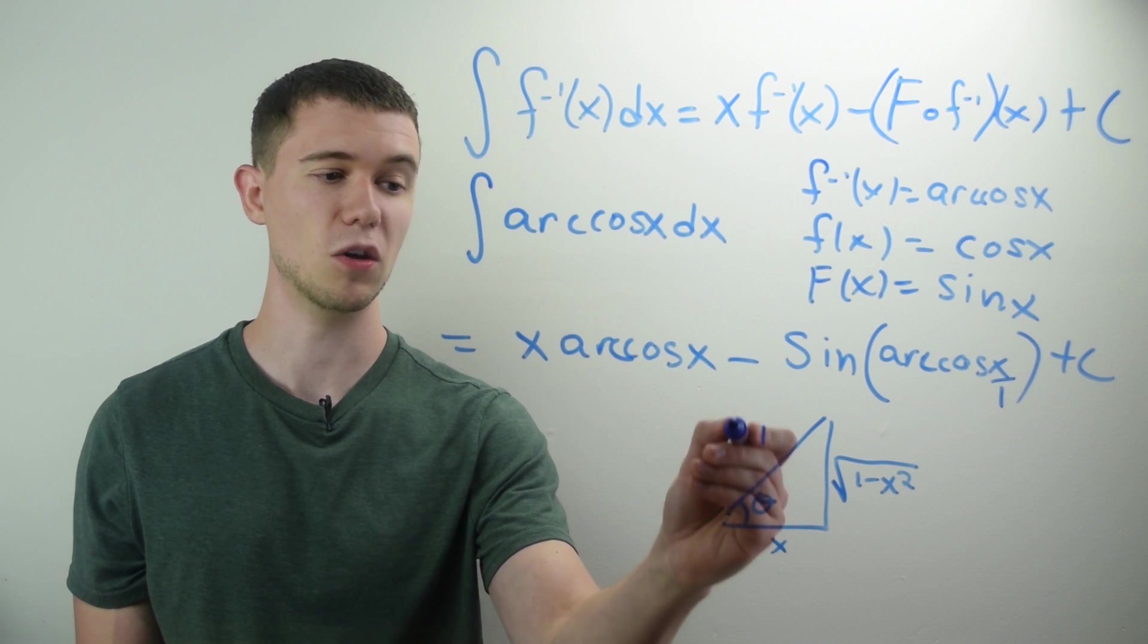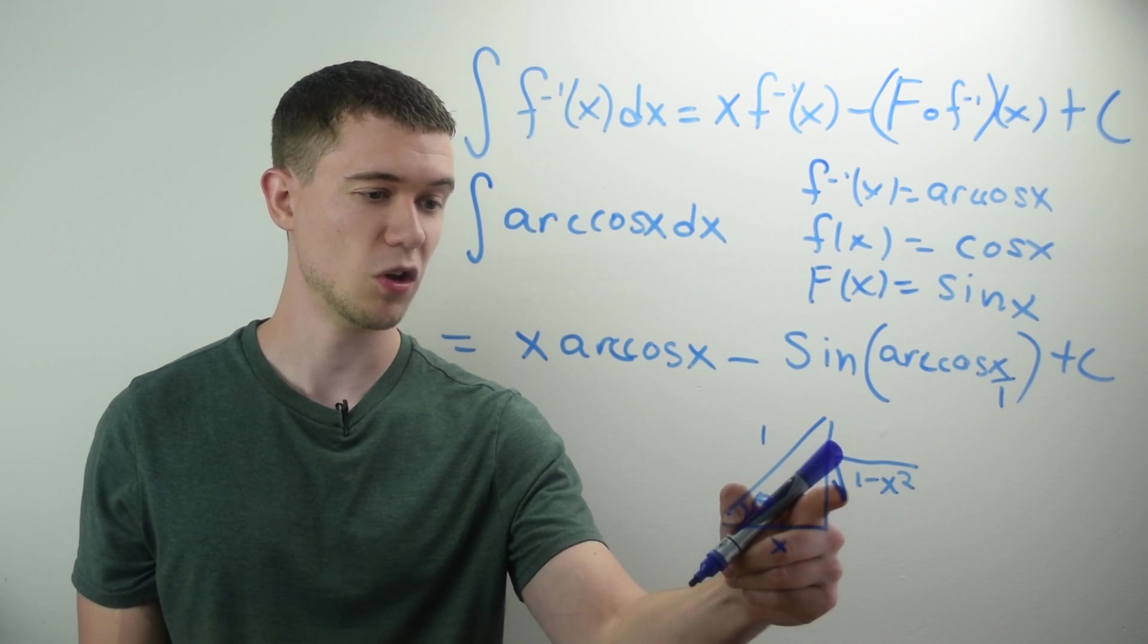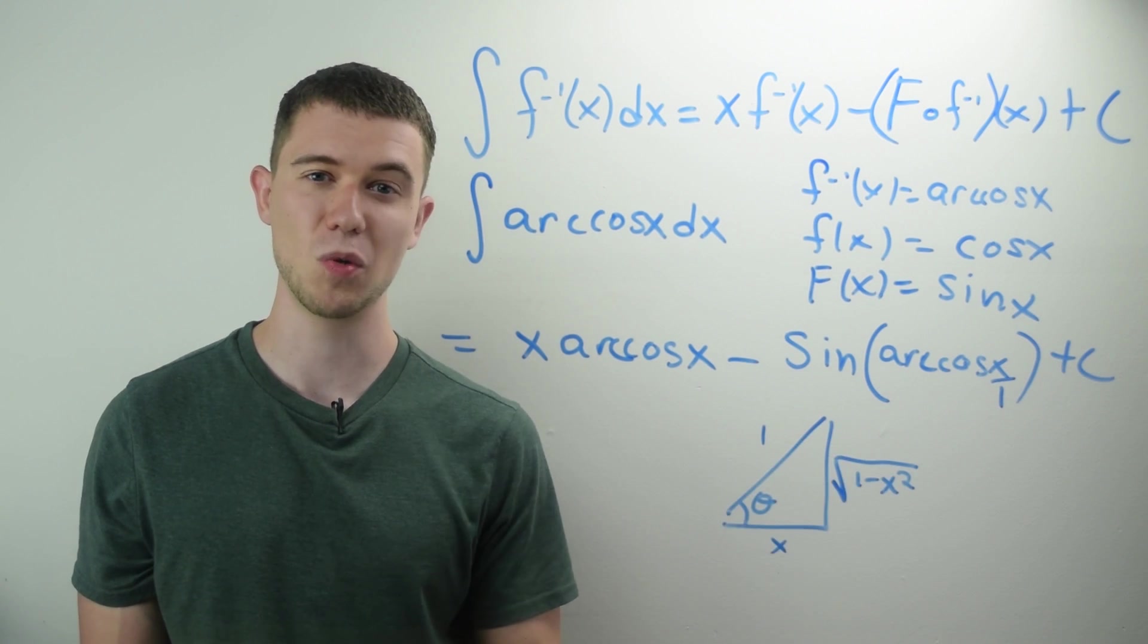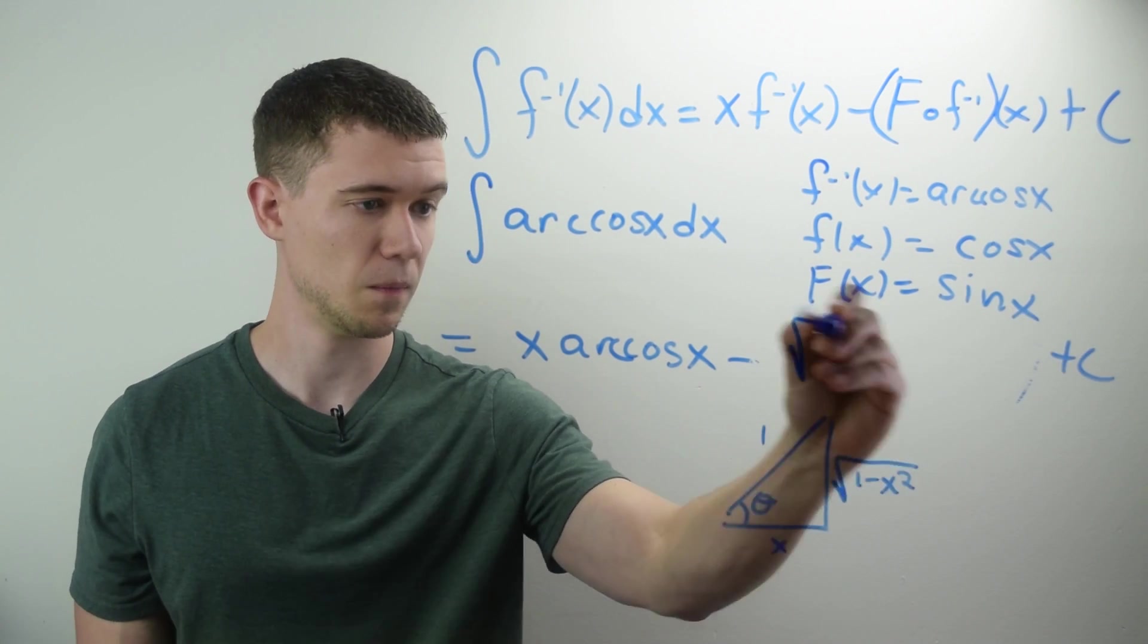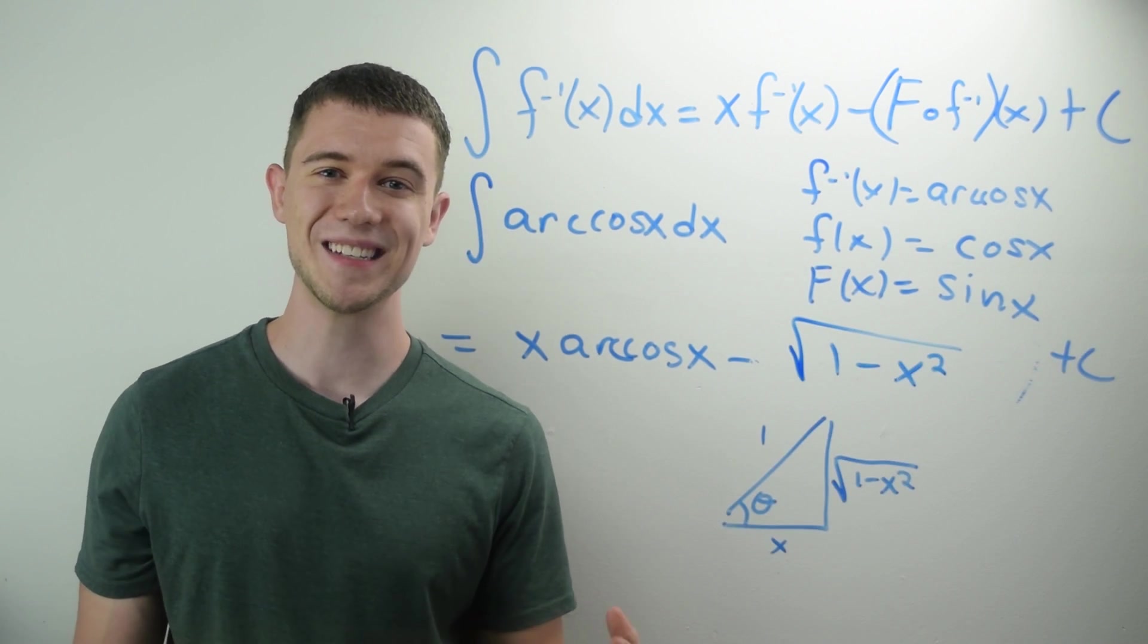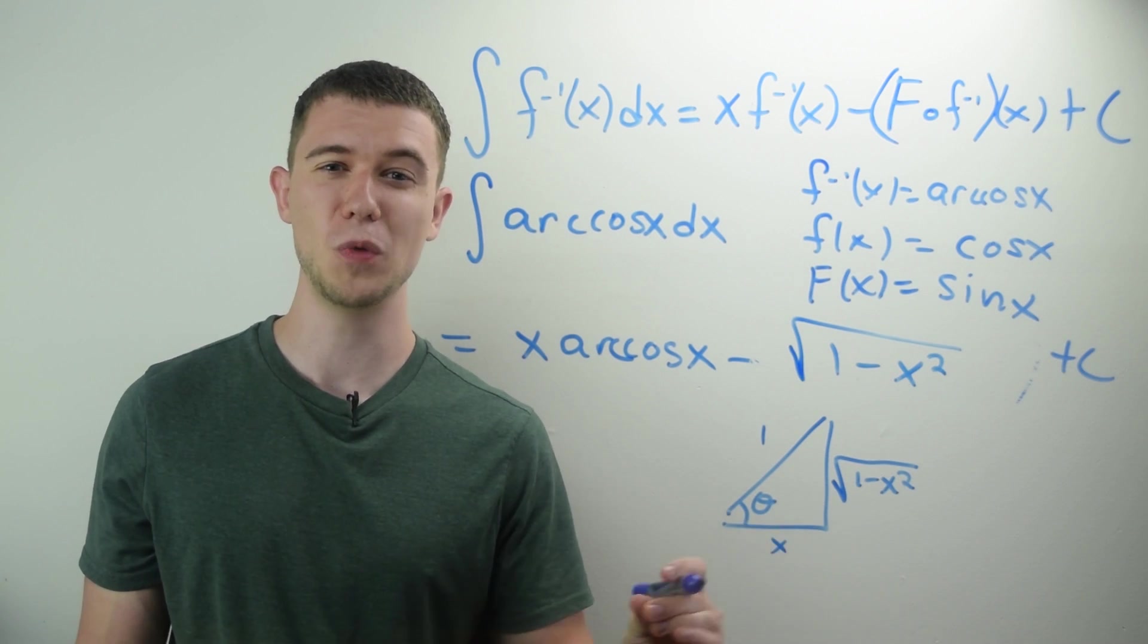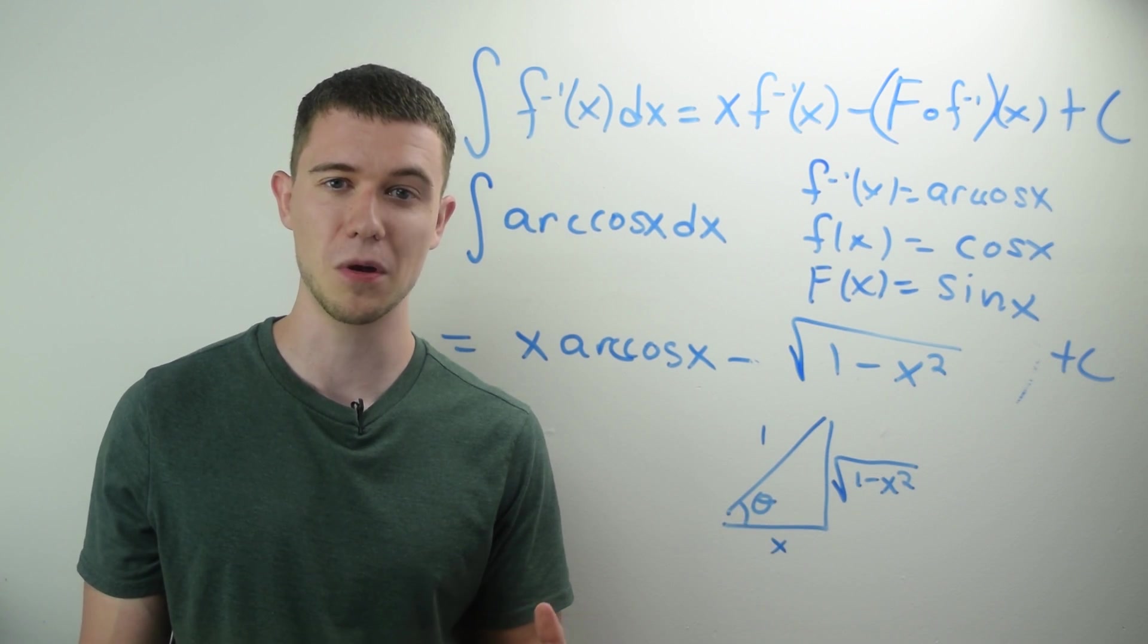And now all I need to look at is what is the sine of this triangle? Well, sine is opposite over hypotenuse. So just square root of 1 minus x squared over 1. I'll just replace that in this formula. And there you go.